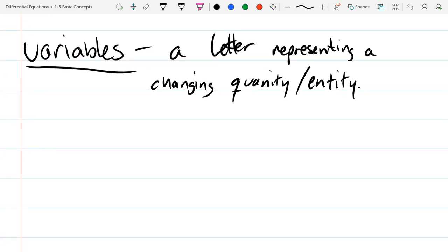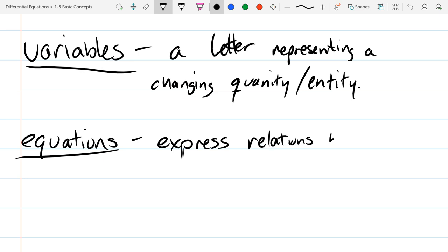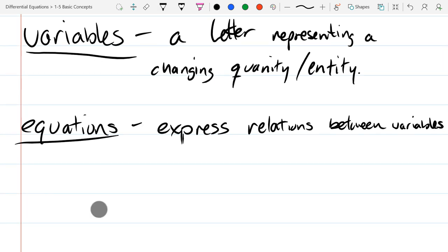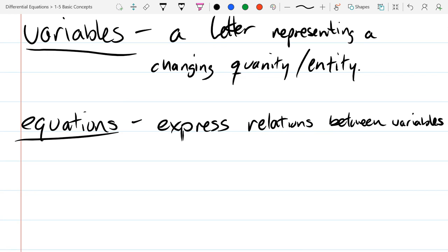So that's variables and equations. Equations express relations between variables. So variables are just describing a single quantity or entity and then if you mix a few variables together in an equation it can describe how they interact.